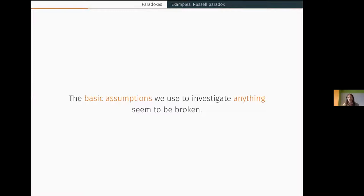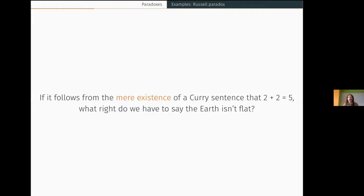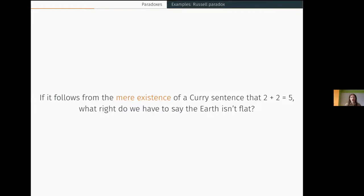The similarities: what's driving the reasoning in these cases is just these basic assumptions we use to investigate anything — about truth, collections, and things either being some way or not. Something has gone wrong with these basic assumptions. If it follows from the mere existence of a Curry sentence that 2+2=5, something is so badly wrong with our basic reasoning that we might be in trouble with ordinary hypothesis testing. Until we sort out curry, liar, and Russell paradoxes, it's unclear how we can trust basic reasoning in more important cases.